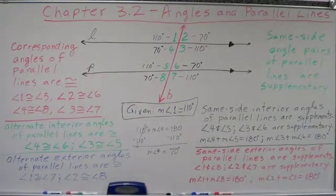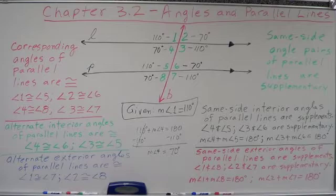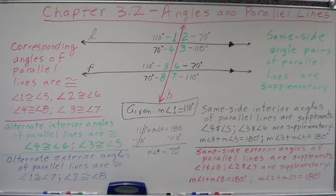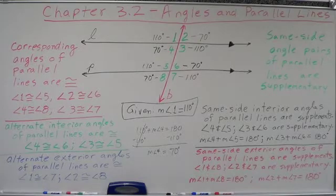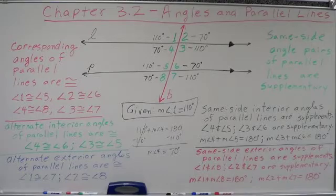It's a really simple problem. Given one angle in a situation where a transversal is intersecting two parallel lines, can you give me all the other seven angles? Yes, you can. That'd make a nice little quiz, wouldn't it? Heads up.